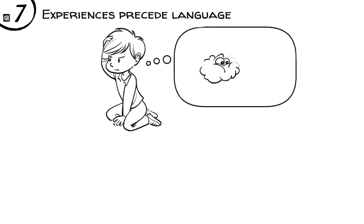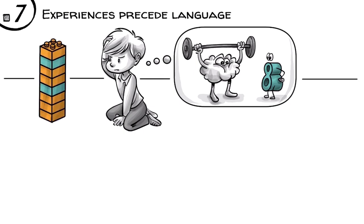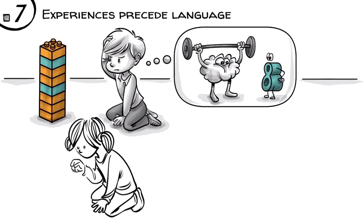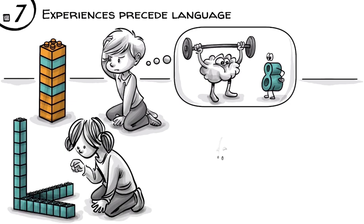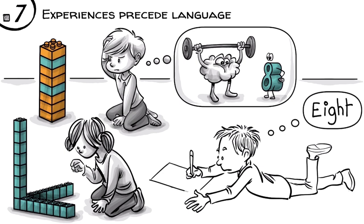Experiences precede language. As we demonstrated, it takes a child a lot of mental training and hands-on experiences to form the concept of a number. At the age of five, we can build a simple row of eight, later form eight square then eight root. Only once we have constructed number concepts inside our heads, can we effectively learn how to express them with images, symbols and language.